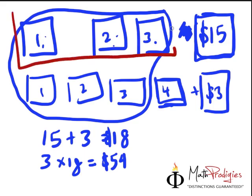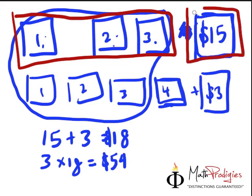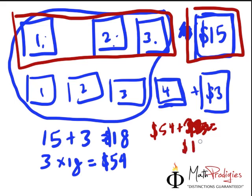However, remember that she will still have an additional $15 in her wallet. Which means that at the start, she has $54 plus $15, which gives you $69. And that is the answer for this question.